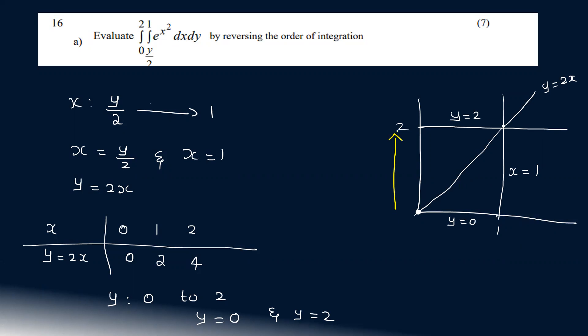y changes from 0 to 2, and x changes from y/2 to 1. y equals 0 at the lower bound and x equals 1 at the upper bound.